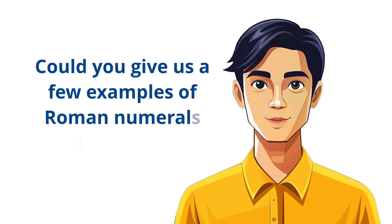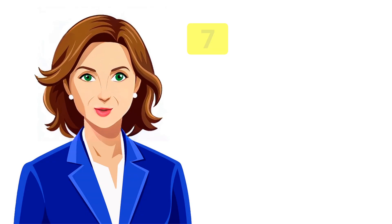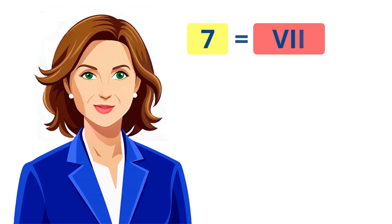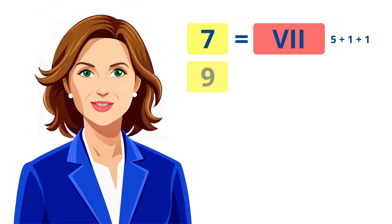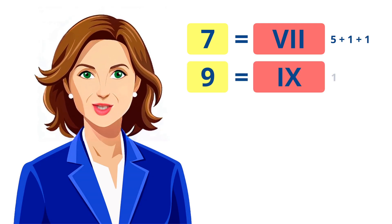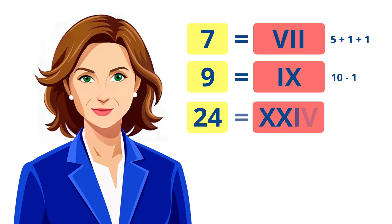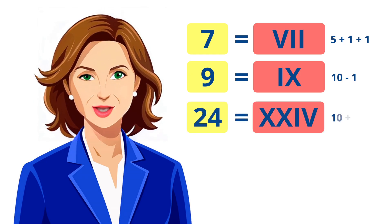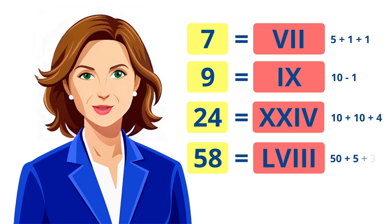Could you give us a few examples of Roman numerals in action? Of course. Let's look at a few examples. 7 is written as VII — 5 plus 1 plus 1. 9 is written as IX — 10 minus 1. 24 is XXIV — 10 plus 10 plus 4. 58 is LVIII — 50 plus 5 plus 3.